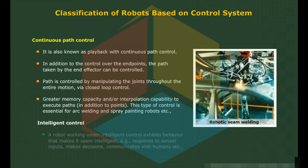Intelligent Control: a robot working under intelligent control exhibits behavior that makes it seem intelligent. Examples include responding to sensor inputs, making decisions, and communicating with humans.